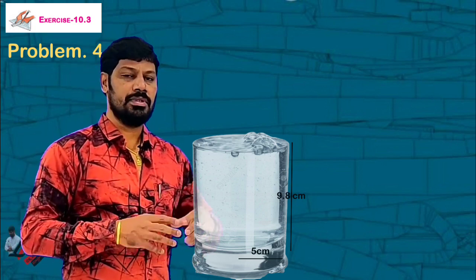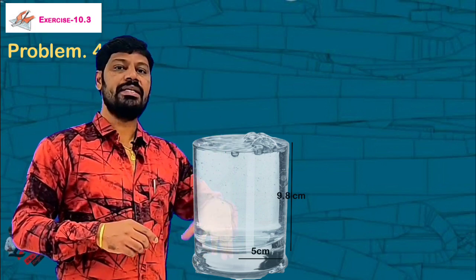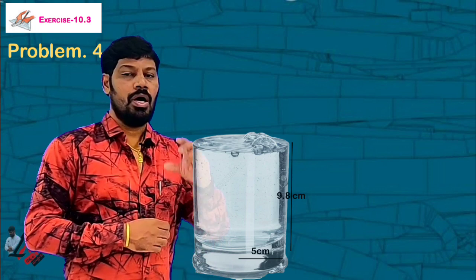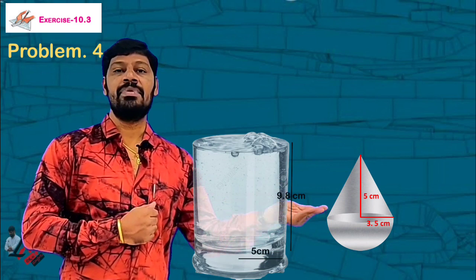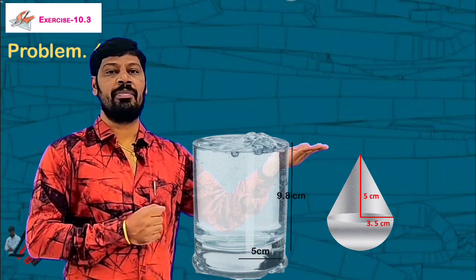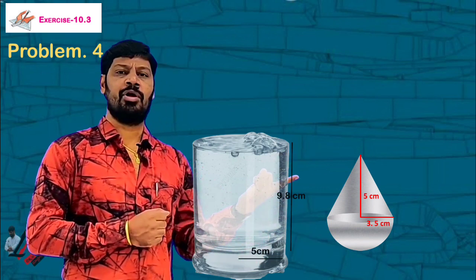But here it is very dark. In this field, in this tank or in this tub, there is an object. What is the object? I will show you the same. There is a cone in a hemisphere. This shape is the second problem. One cone is surmounted on the hemisphere.